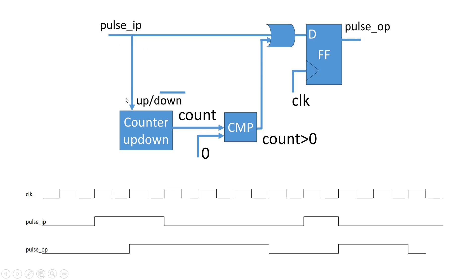So, as soon as this pulse input goes zero here, counter is still at value two. So, two is greater than zero. So, comparator is giving output as one. So, this one is reaching to the input of D flip-flop and finally reaching at the pulse output. But, because pulse input goes zero, this counter will start counting in the downward direction. Two, one, zero and it will stop at zero. So, for two clock cycles, this comparator is going to give its output as one.